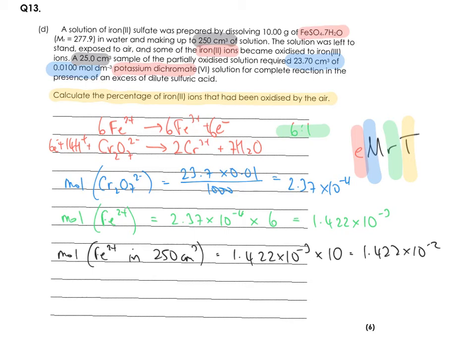So next step is to work out what mass this is of the iron sulfate. So what you can do is the mass of iron sulfate that that represents is 1.422 times 10 to the minus 2 times by the MR, which is here. So 277.9. And that gives us 3.95.